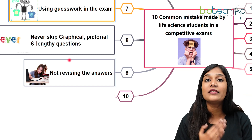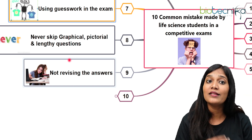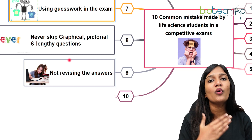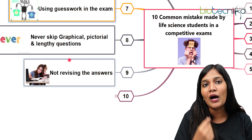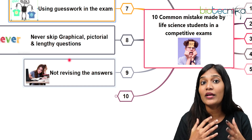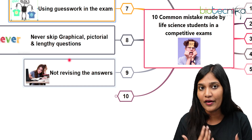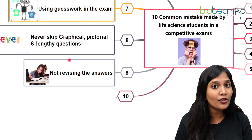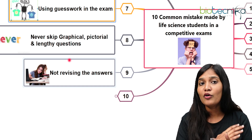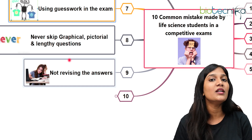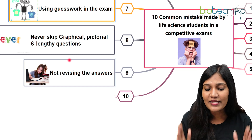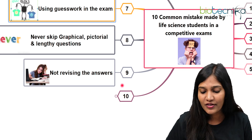Always revise your answers even after writing them. If you find you've marked some answers wrongly on the OMR sheet, you can approach the examiner and ask for another OMR sheet. If you don't revise your answers, it would be very, very difficult, because all the efforts you put in will go in vain. So always revise your answers after writing.